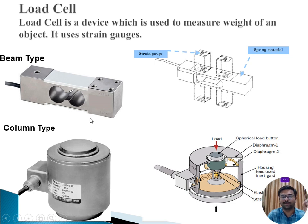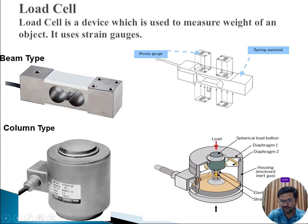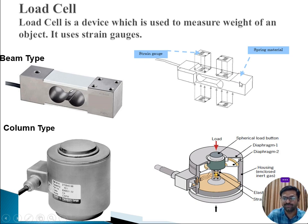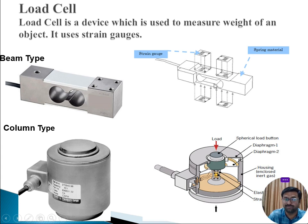In the beam type, you can observe four different strain gauges — the first, second, third, and fourth. Two strain gauges are placed above the hollow tube and two below it. There is a spring material at one end connected to the rigid body, so there is no movement at the fixed end. At the spring end, there is a hanging motion, and that motion is converted into a resistance change, then back to an electrical signal.